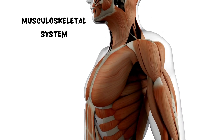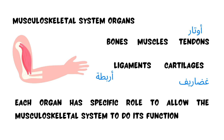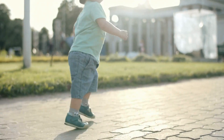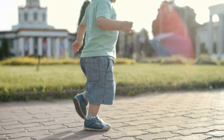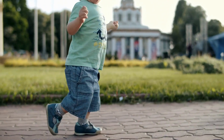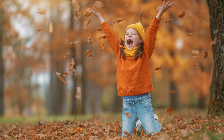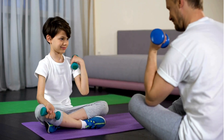The musculoskeletal system consists of bones, muscles, and three more organs: tendons, ligaments, and cartilages. Each of these five organs in the musculoskeletal system has a specific role to allow the system to perform its function. The function of this system is the movement of the body — we move by this system. As we will see, the muscles contract and relax so they can move the bones. We can walk, run, and raise our hands — any movement we do is by the musculoskeletal system.